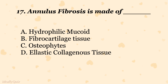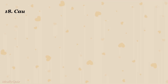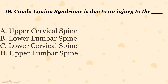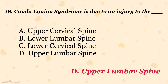The correct answer is B) fibrocartilage tissue. Cauda equina syndrome is due to an injury to which region? A) upper cervical spine, B) lower lumbar spine, C) lower cervical spine, D) upper lumbar spine. The correct answer is D) upper lumbar spine.